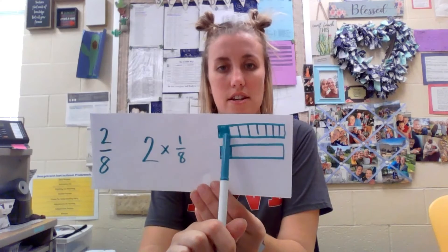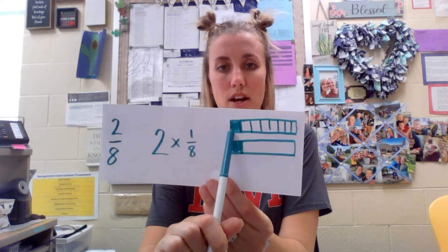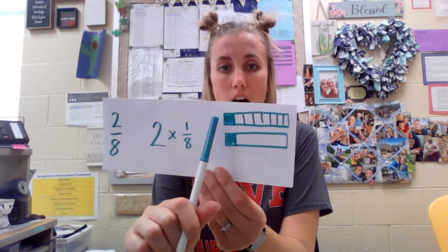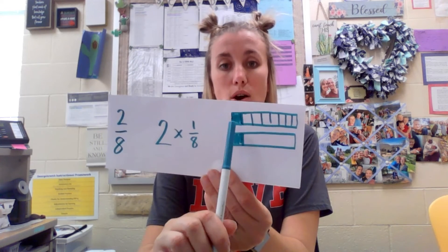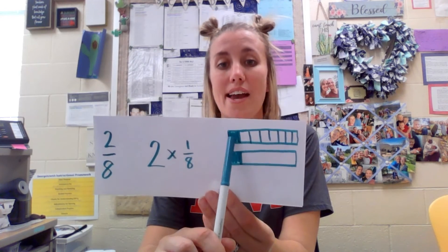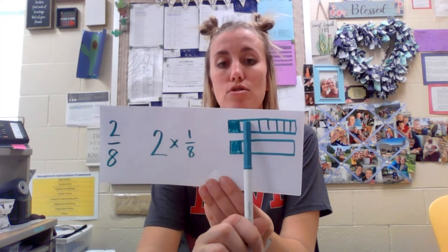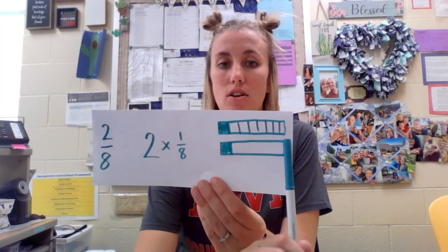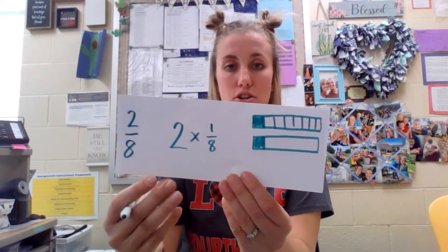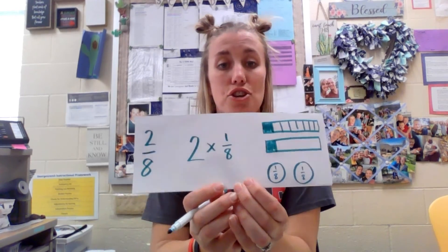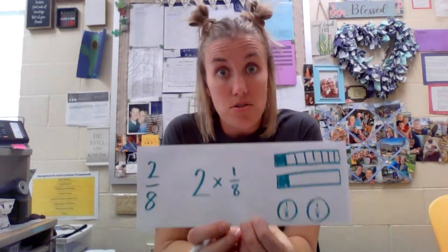Finally, we would draw a diagram. I'll draw a different diagram right now than I drew just a second ago, just to show you your options. It would look like this — two groups, with one eighth in each group, and only one eighth is shaded, because this shows you that there are eight pieces in the whole and only one of those pieces is shaded. You could also do this — a diagram like this as well.